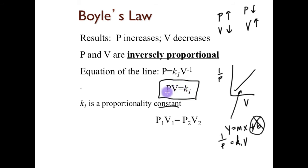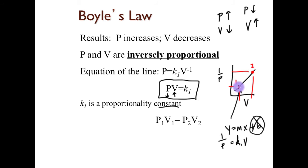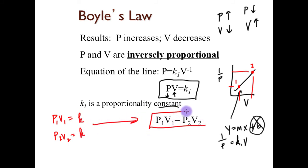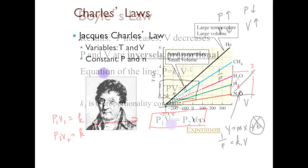So if pressure goes down, volume goes up. I can pick any two points on the graph — point one and point two. The slope, which is k, is constant for both. So P₁V₁ = k and P₂V₂ = k, meaning P₁V₁ = P₂V₂. This is the more useful version of Boyle's Law.